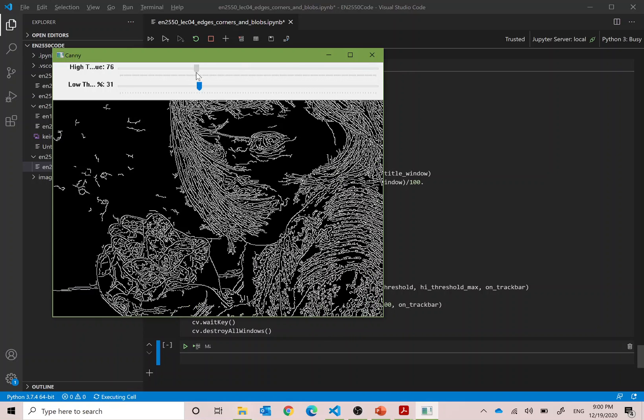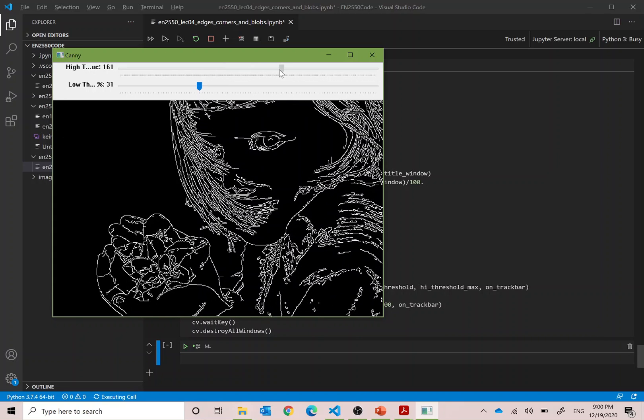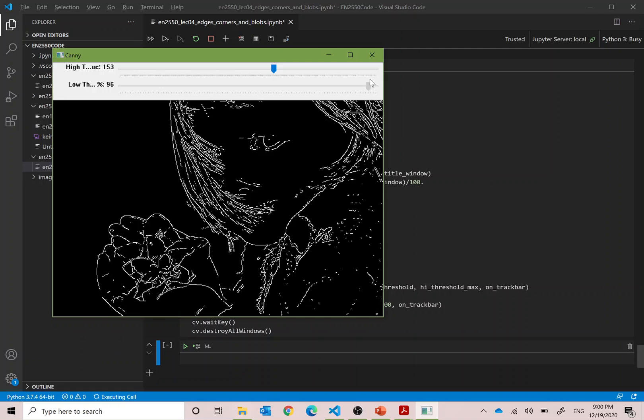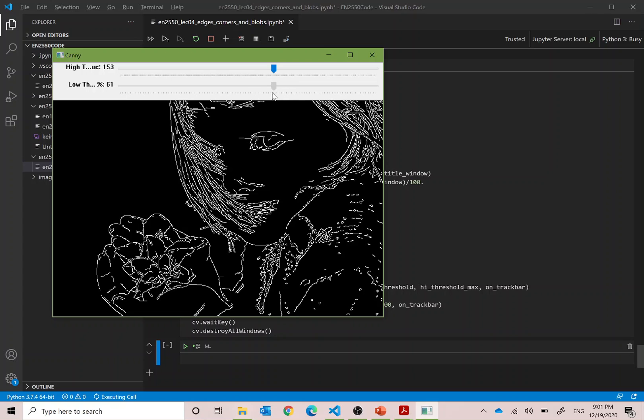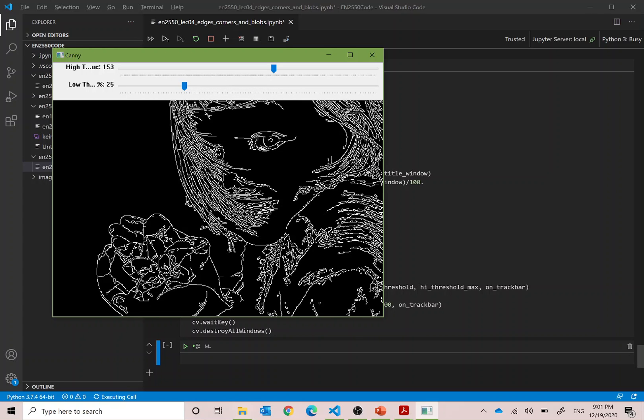Let us pick a reasonable high threshold. Maybe high threshold of 100, maybe this one. And then when you have a very high low threshold, low threshold is almost now close to the high threshold. And now when you lower it, you can see it just start increasing. They start lengthening. Starting from the eye, they start lengthening.